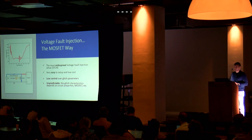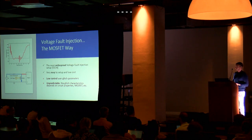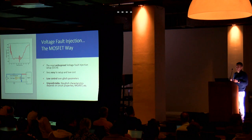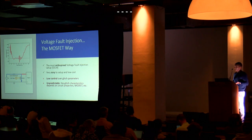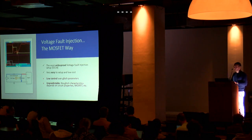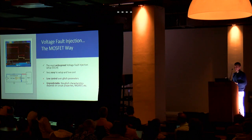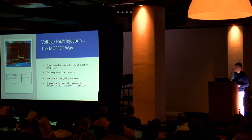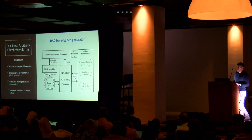This setup gives you limited control over glitch parameters — you can vary the duration and injection timing, and with more hardware you can adjust the amplitude, but nothing more. The results are also somewhat unpredictable: the waveform is quite noisy, with overshooting and undershooting. Every time you change the target or something in the circuit, the shape changes. It depends on the MOSFET used, the PCB capacitance, inductance of the traces, and so forth.